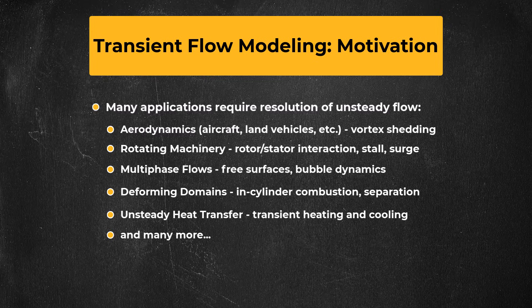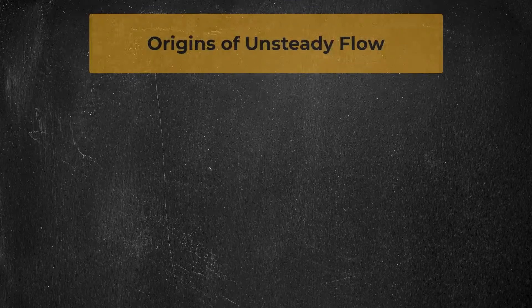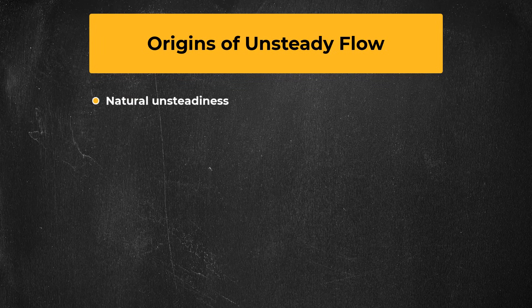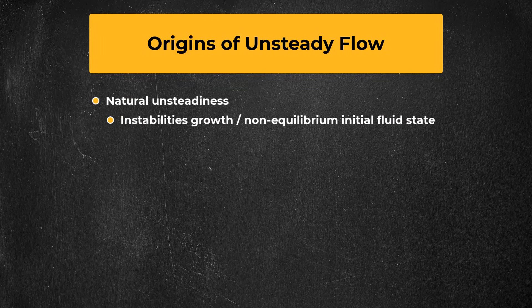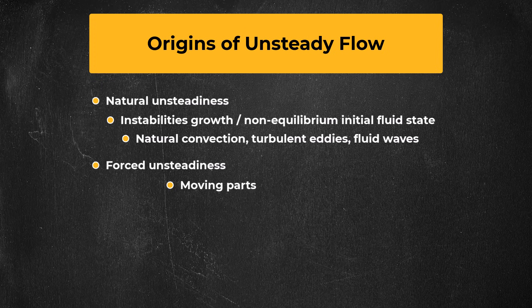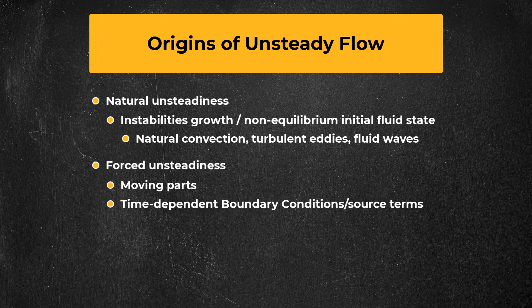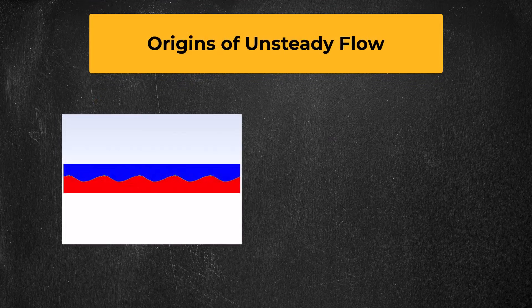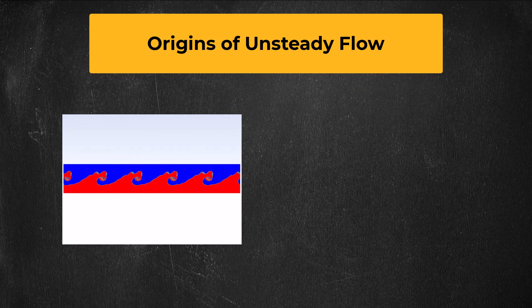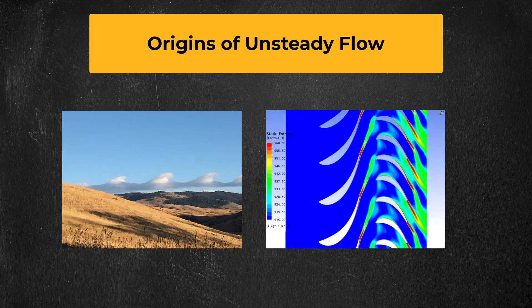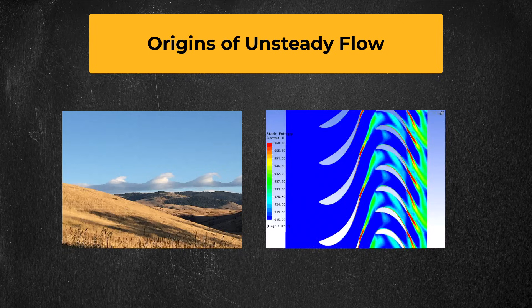Before talking about CFD, it's useful to step back and think about what causes some flows to be unsteady. Sometimes it is because of natural unsteadiness that results from the growth of instabilities in the fluid or from a non-equilibrium initial fluid state. Other times, unsteadiness might be caused by moving parts or time-dependent boundary conditions or source terms, and this would be considered to be forced unsteadiness. The Kelvin-Helmholtz instability on the left is an example of natural unsteadiness, and the animation of the axial compressor stage on the right is an example of forced unsteadiness.